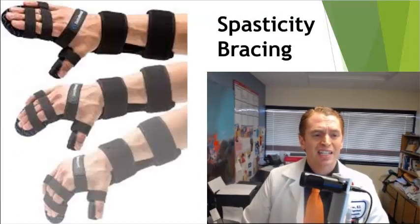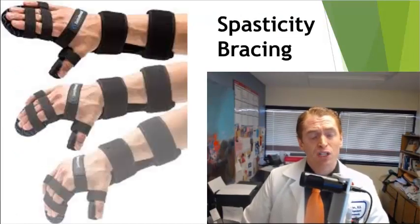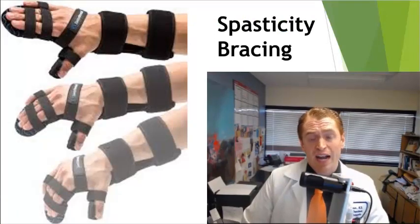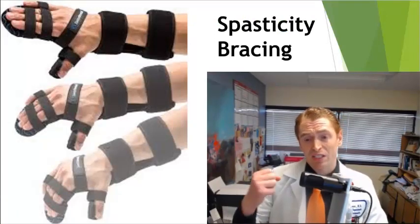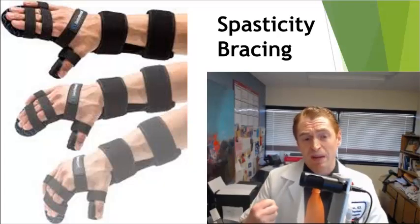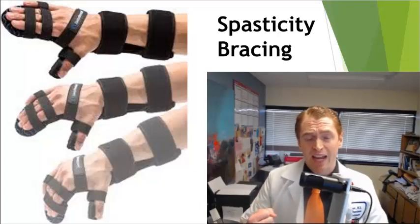This is an example of an upper extremity brace often used after a major stroke causing paralysis and contracture of the hand, and of course this would only be used with severe spasticity with limited use of the hand.